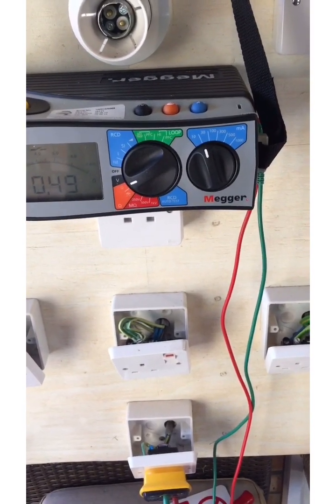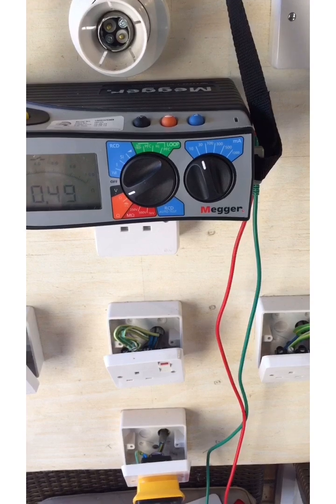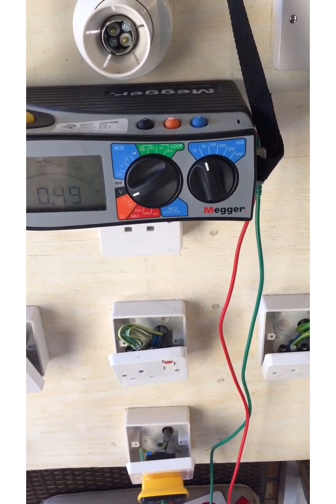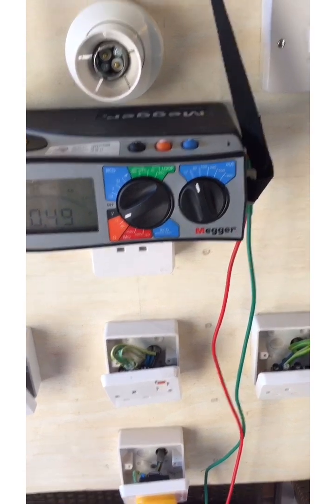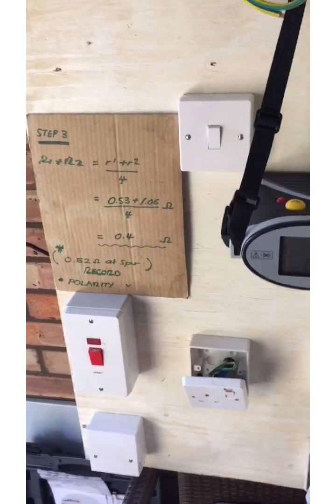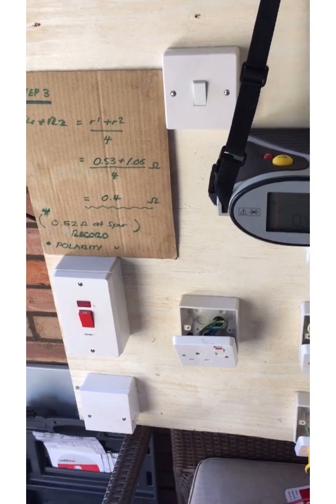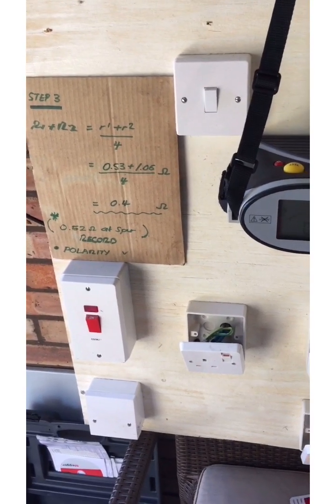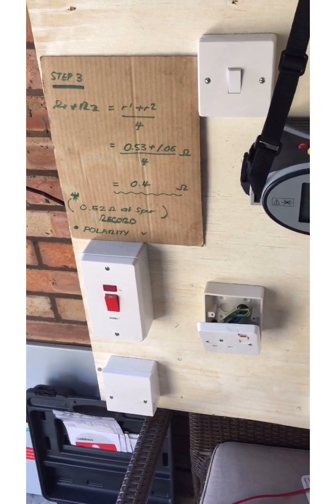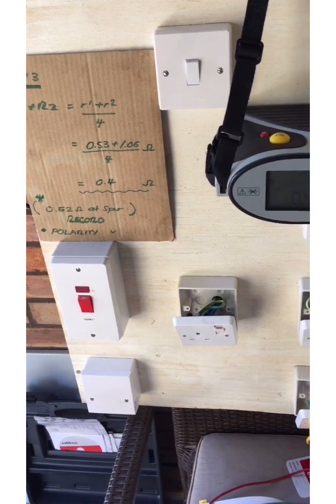When we do step two it proves that line and neutral are at the bottom two barrels and it's only when we do that third test that it proves that looking at it from the front that the right hand side has got to be the live. There's quite a bit to take in with this particular test and when I'm teaching electricians in class it tends to be this one that they struggle with because there's quite a lot of information coming at you but I suggest if you're trying to get a grip of this to watch it quite a few times and get it right into your head and try to understand every step.